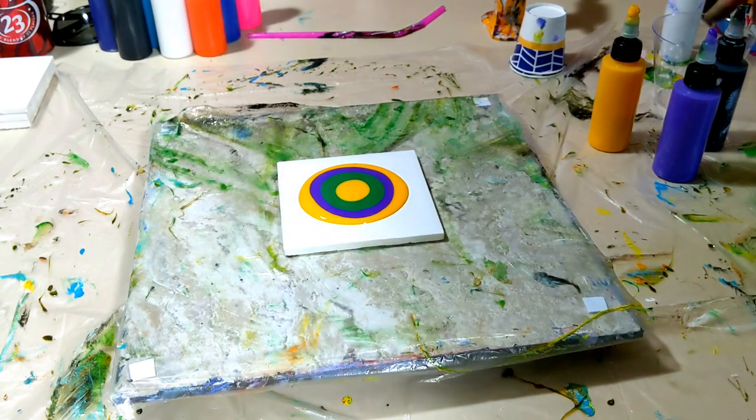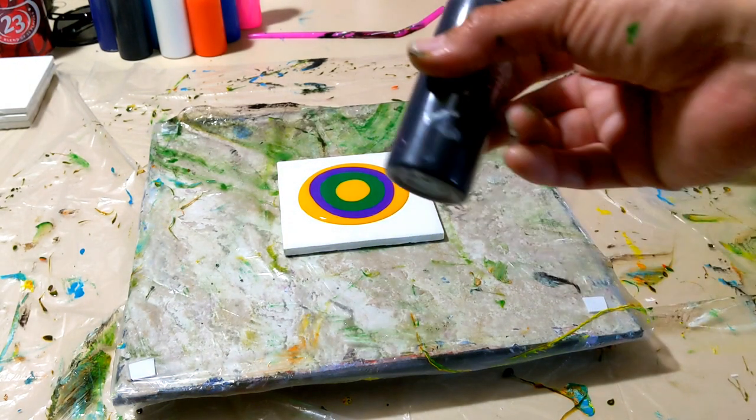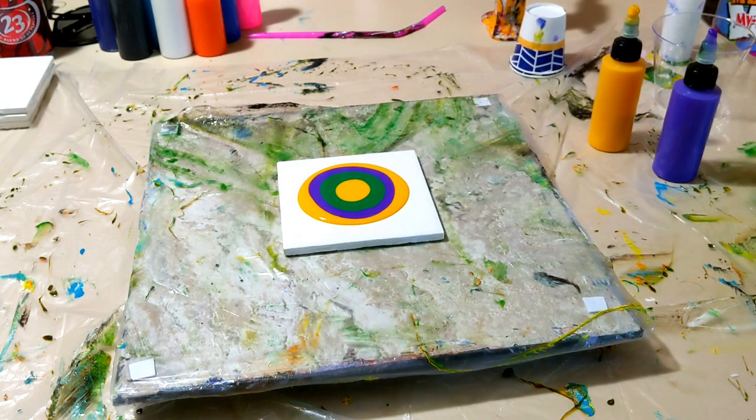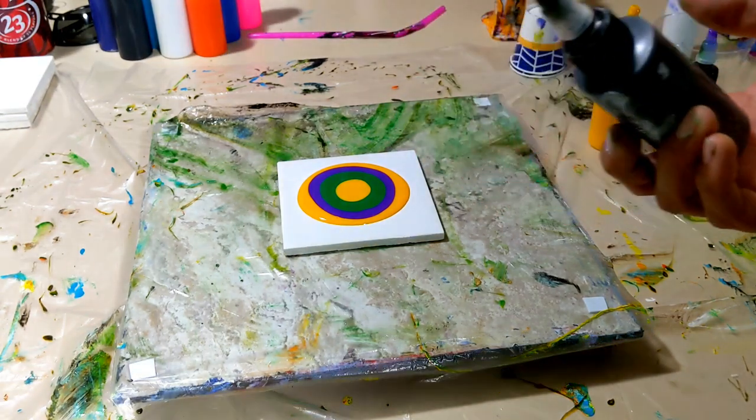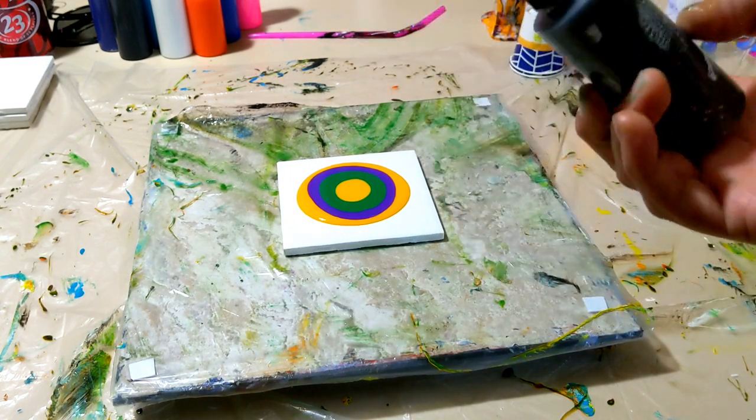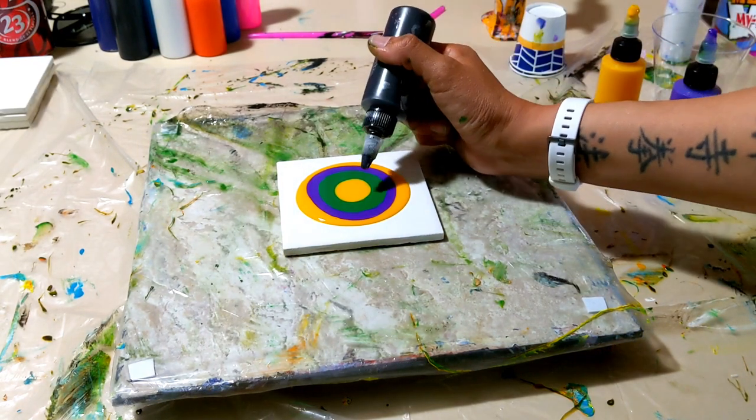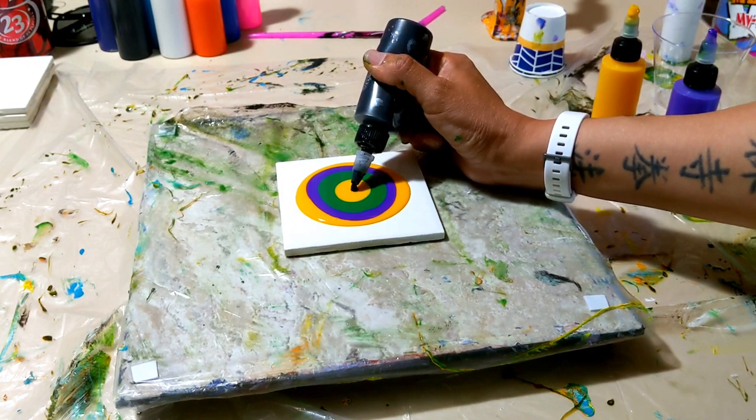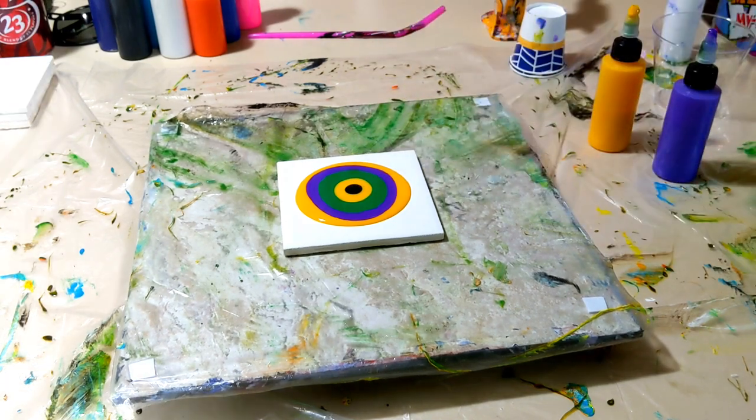We're using the oxide black from Amsterdam paint. I mixed this I believe two, maybe three parts to one paint. Floetrol to paint with a little bit of water. And yeah, we're just going to go ahead and drop a little dab right there.